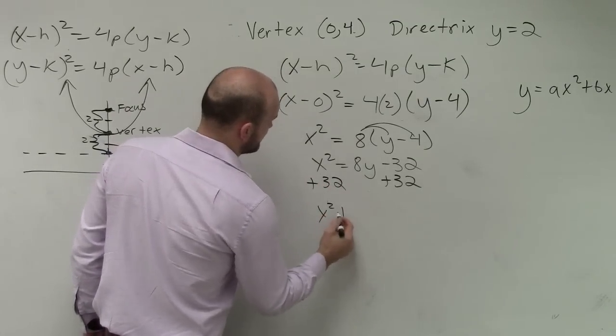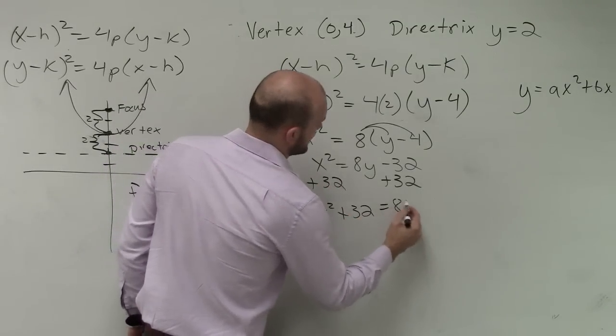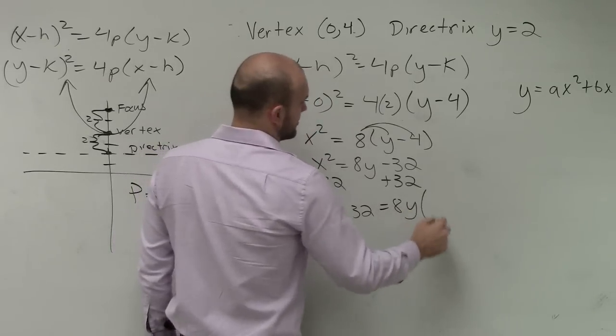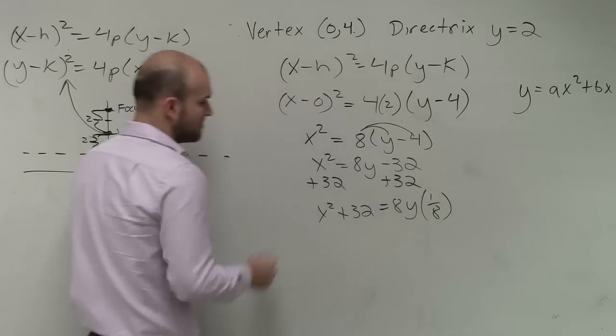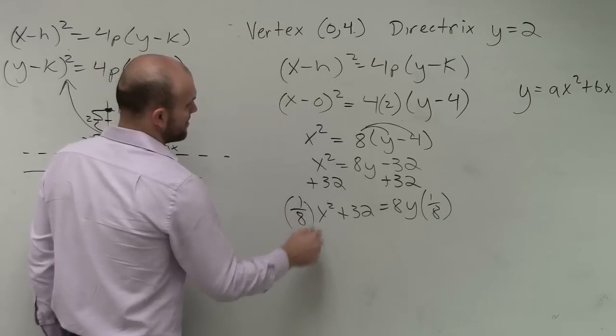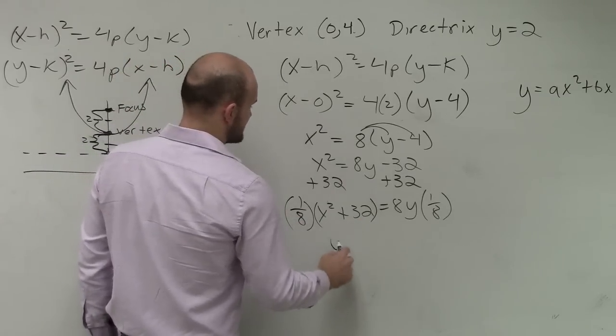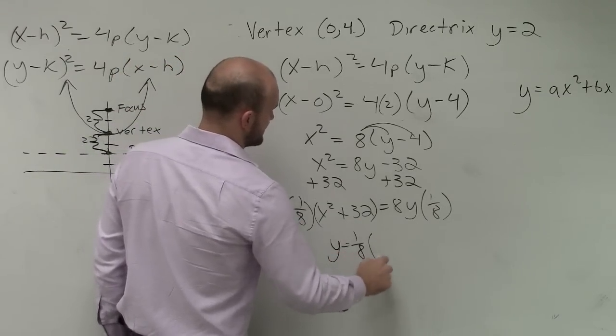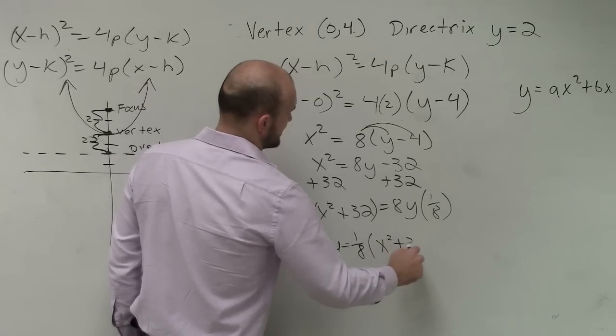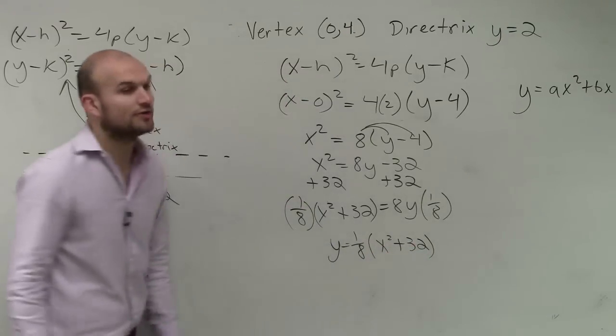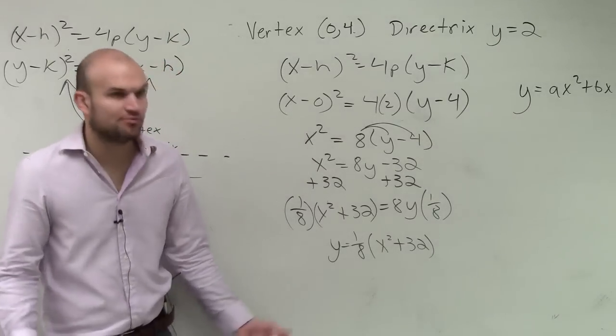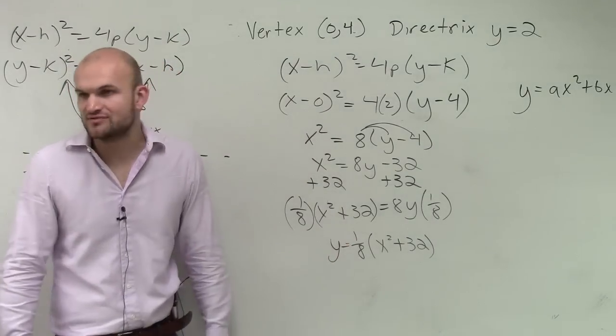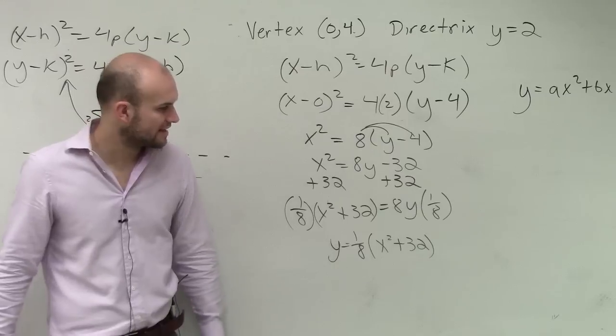So we have x² + 32 = 8y. Let's divide by 1/8 or multiply by 1/8, which is the same thing as divided by 8. So therefore I can say y = 1/8 times x² + 32. If you want to write it as y = x²/8 + 4, that's fine as well. Okay? But I'll just leave it at that form.